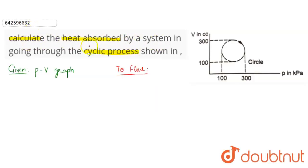heat absorbed by a system in going through a cyclic process as shown in the figure. So we are given a p-v graph and we need to find the heat absorbed by the system. All right, so before we solve